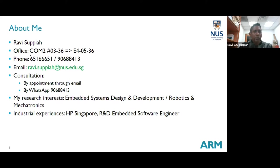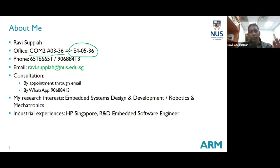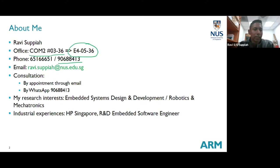In terms of my location, at SoC I will sit there. Currently for FoE Zone A I have temporarily moved — the office is directly opposite the ECE general office conference room. If you come to E4 Level 5, you'll see the ECE general office. On the left-hand side there's a long corridor with all the staff offices; go all the way to the end and you'll see my office. My landline is still at my SoC office but diverted to my handphone, so it's easier to WhatsApp me.